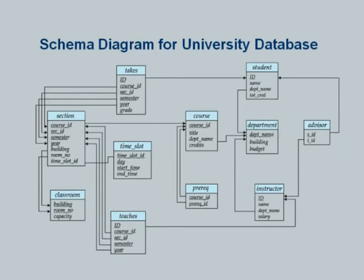There are a few more relations. A course may have a prerequisite — for example, you are allowed to take the database course only if you have done a data structures course. We would have a prerequisite tuple which says that the ID for the data structures course is listed as a prerequisite for the ID of the database course. The prerequisite relation has course_id and prerequisite_id, which says that prerequisite_id is required in order to take course_id. A course can have multiple prerequisites, so course_id by itself is not a super key, but the combination of the two would be the only meaningful super key and therefore the primary key.